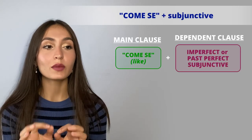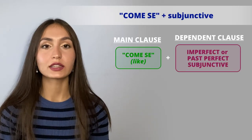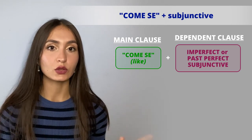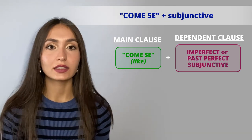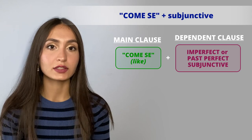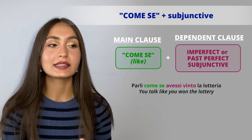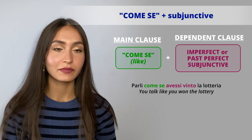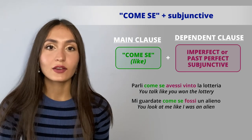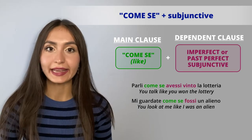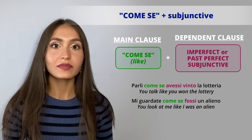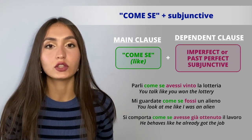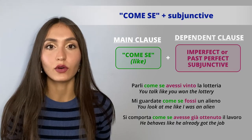Be careful with 'come se' — either the imperfect or the past perfect subjunctive are always used, regardless of the tense in the main clause. For example: 'parli come se avessi vinto la lotteria'; 'mi guardate come se fossi un alieno'; 'si comporta come se avesse già ottenuto il lavoro.'